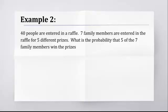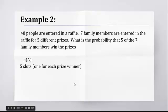What's the probability that five of the seven family members will win the prizes? It means they win them all. What's the probability that they win all the prizes? So, to do that, we kind of put together N of A and N of S. I'm doing this backwards this time, but that's fine. N of A, we have five slots for each prize winner. So, we're trying to figure out how many ways can the seven family members actually win the five prizes.